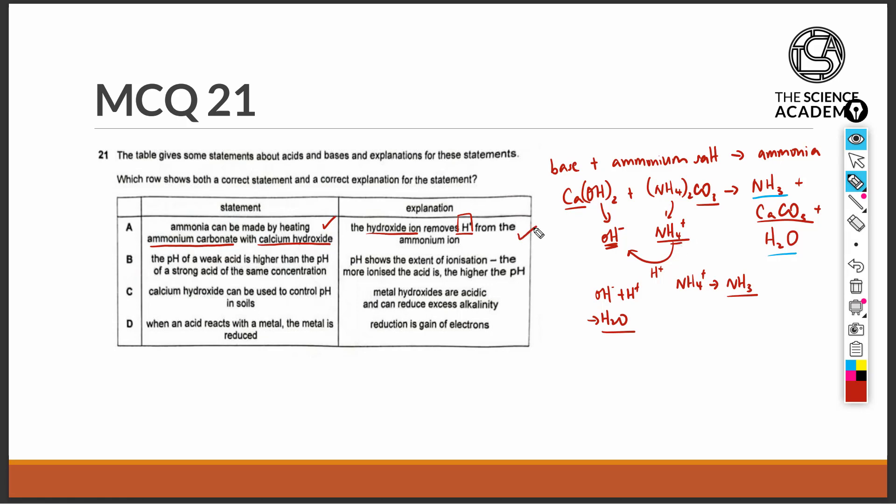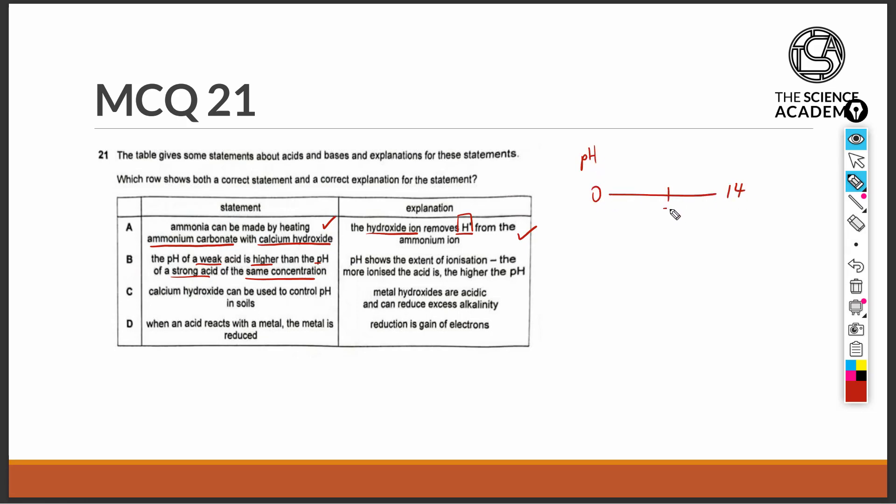Let's take a look at why options B, C, and D are wrong. Option B states that the pH of a weak acid is higher than the pH of a strong acid of the same concentration. We know that the pH scale ranges from 0 to 14, with 7 as the neutral pH, and anything below 7 as acidic, and above 7 as alkaline.